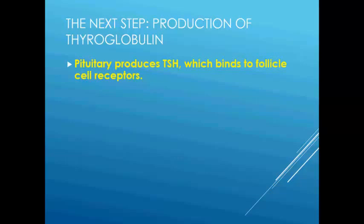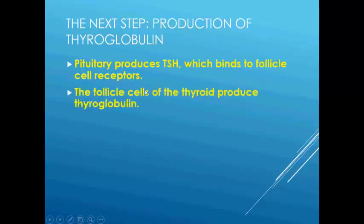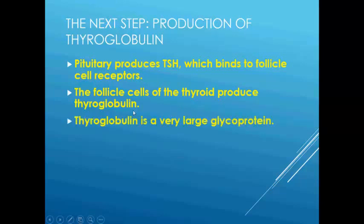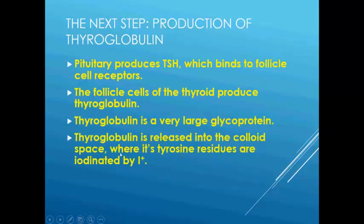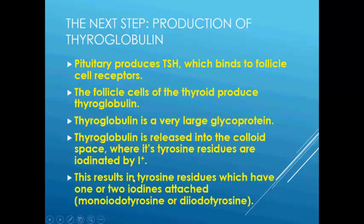The pituitary produces TSH — thyroid-stimulating hormone — which binds to the follicle cell receptors. Follicular cells of the thyroid produce thyroglobulin, which is a very large glycoprotein, and it is released into the colloid space where the tyrosine residues are iodinated by I+. This results in tyrosine residues which have one or two iodines attached.